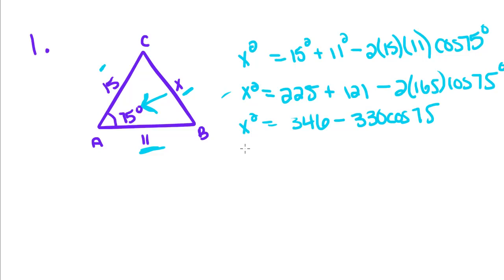Okay, so this is where we have to plug stuff into the calculator. So this is how it's going to look when you plug it into the calculator. You're going to plug 346 minus 330 cosine of 75, just like this, except there'll be a parenthesis here, and you want to close that parenthesis too. So let's go ahead and type that into the calculator: 346 minus 330 cosine of 75, close the parenthesis, and rounding to the second decimal place, we're going to get X squared is equal to 260.59.